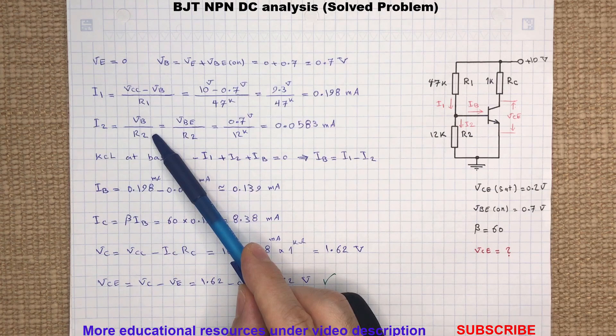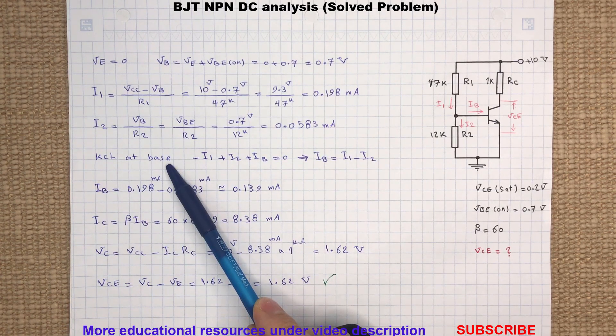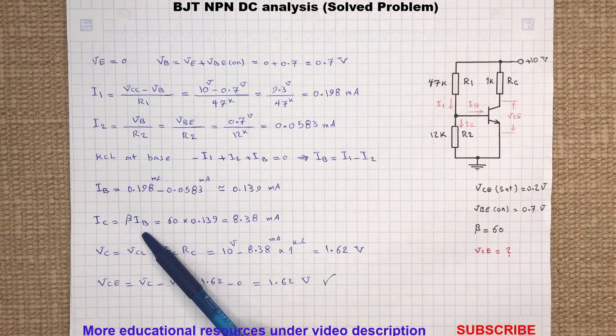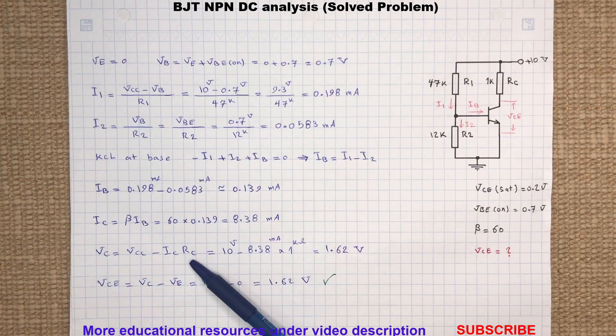Now with KCL we can determine the base current IAB. As we know, the collector current is beta times the base current. By knowing the collector current, we can find the voltage at the collector node.